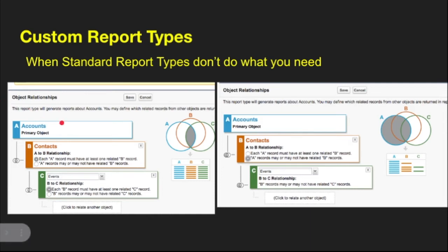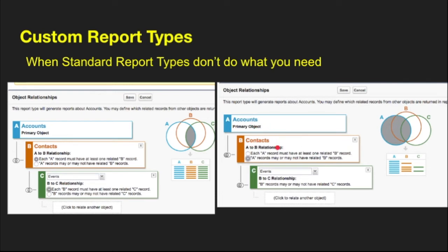Within a custom report type, you can specify the primary object — you always have to specify the primary object. In this scenario, I have the account. You can specify the related object, which I have as contacts. When you specify the related record, you can say the account must have at least one related contact record, or you can say the contact records may or may not have a relation to the account. So it will show all accounts with contacts regardless of whether the account has a contact or not, and the same thing applies to events tied to them as well.